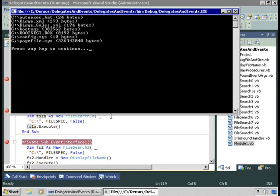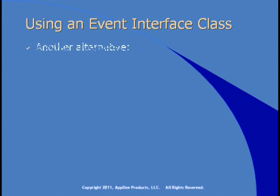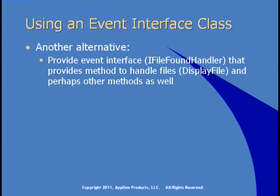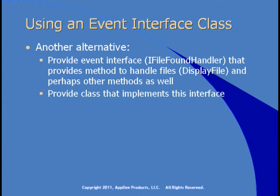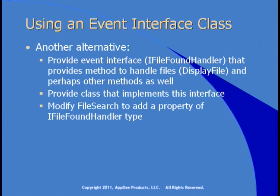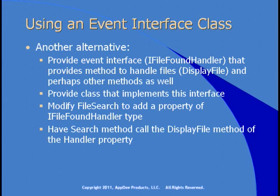It seems like we've done a lot of work — we keep copying and pasting and overriding, a lot of effort just to change one little tiny feature of this class. One alternative that developers used before .NET was to create an event interface, which I'll call iFileFoundHandler. That provides a method to handle the files, which I'll call DisplayFile, and perhaps other methods as well. You need to provide a class that implements this interface and modify the FileSearch class to add a property of this type and have the search method call the DisplayFile method of the handler property.